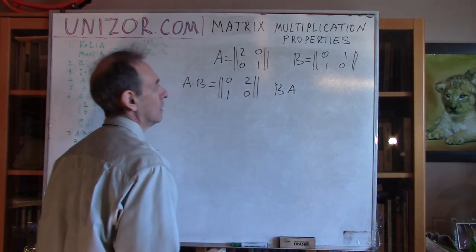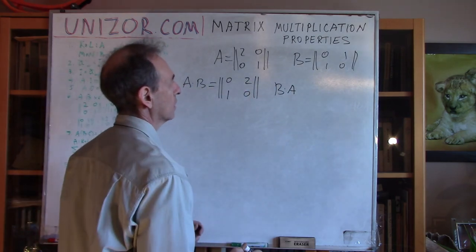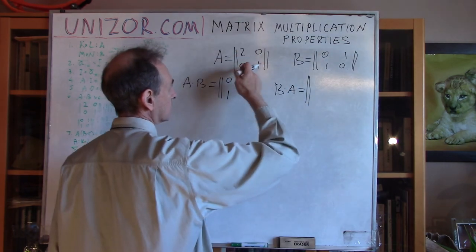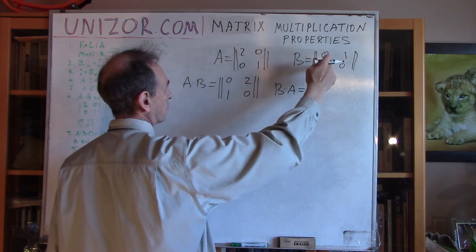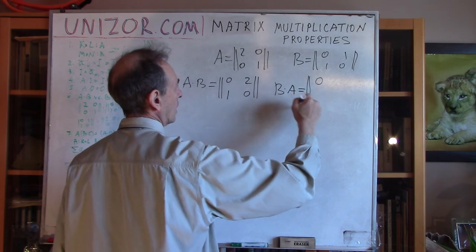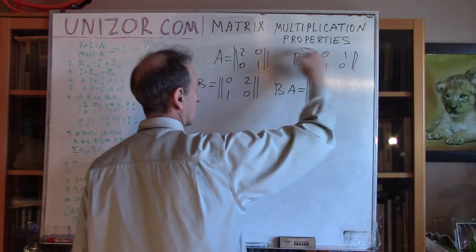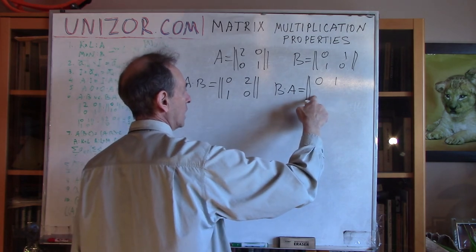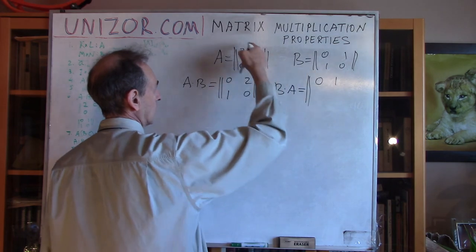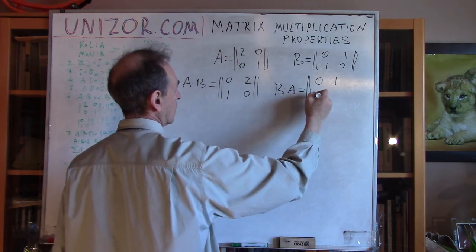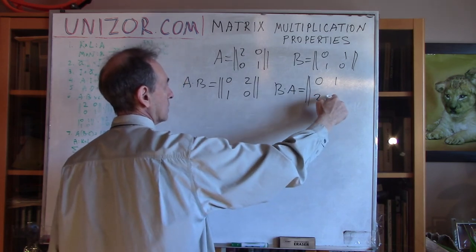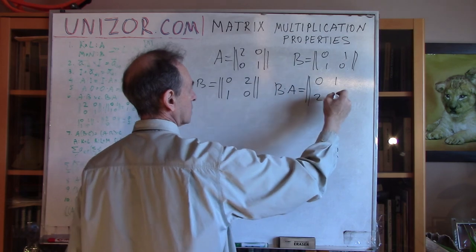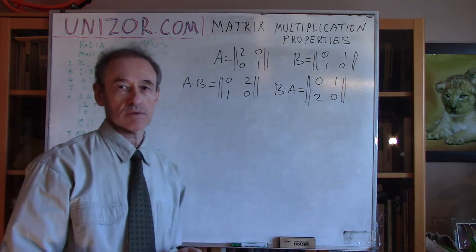B times A: changing the order. Element (1,1): first row of B times first column of A: 0·2 + 1·0 = 0. Element (1,2): first row of B times second column of A: 0·0 + 1·1 = 1. Element (2,1): second row of B times first column of A: 1·2 + 0·0 = 2. Element (2,2): second row times second column: 1·0 + 0·1 = 0. So B×A = [0, 1; 2, 0]. As you see, we have different matrices — matrices do not necessarily commute.